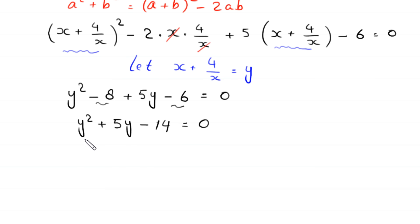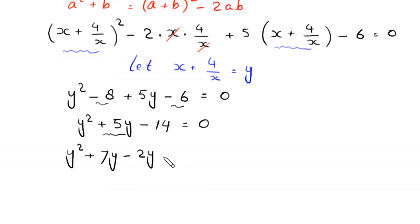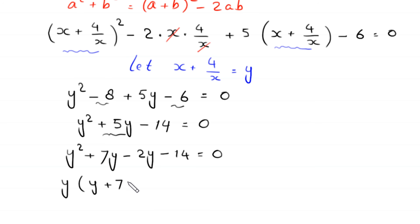We write y squared and split 5y as plus 7y minus 2y, giving y squared plus 7y minus 2y minus 14 equals 0. From the first two terms, we factor out y to get y times bracket y plus 7. From the last two terms, we factor out negative 2 to get negative 2 times bracket y plus 7.